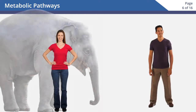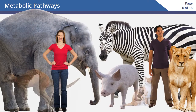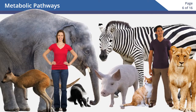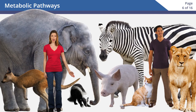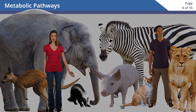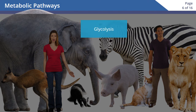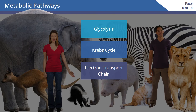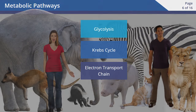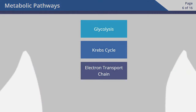Here are the processes sorted into catabolic and anabolic processes. Humans, and nearly all other organisms, rely on breaking down glucose to provide energy for cells. An aerobic organism accomplishes this by using glycolysis and aerobic respiration, including the Krebs cycle and the electron transport chain. Let's see how this works in the human body.